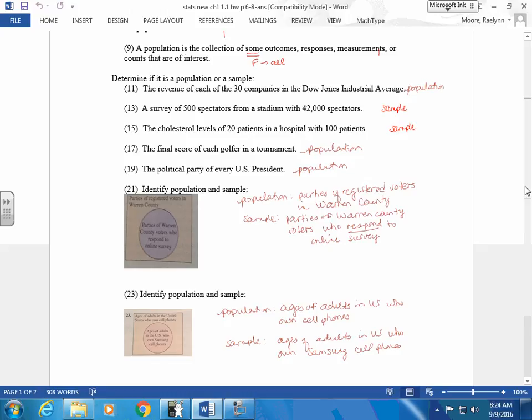This is the Venn diagram. Venn diagrams are kind of like fading out, but I like Venn diagrams. This whole box represents your population. This little piece right here represents just a portion of your population. Your population is the parties of the registered voters in Warren County. This whole box. And your sample is a subset of this. It's the parties of Warren County who responded to the online survey. If you remember doing these, everything had to add up to your total. Different ways of doing a Venn diagram, but it's kind of nice because it gives you population versus sample.